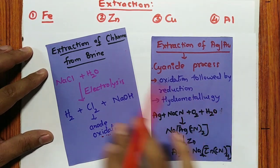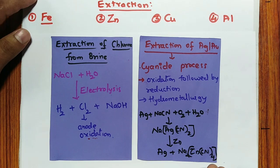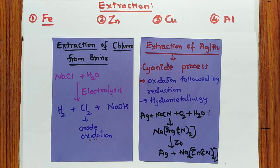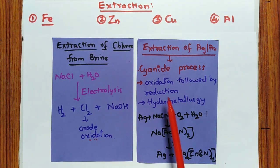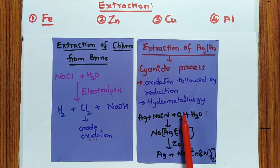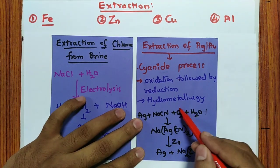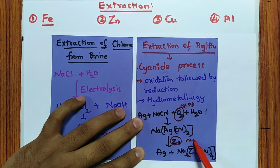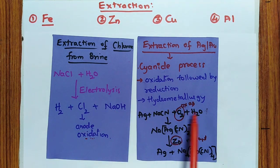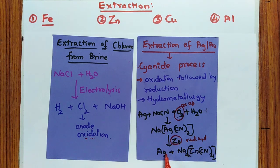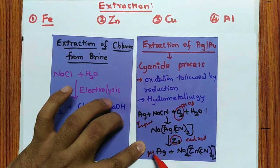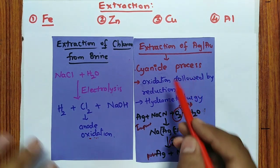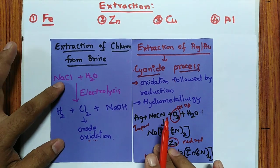Extraction of gold or silver: gold and silver are native metals — less reactive. The process used is the cyanide process, also called hydrometallurgy — oxidation followed by reduction. Oxygen gas is the oxidizing agent; zinc is the reducing agent. Silver reacts with NaCN solution in the presence of oxygen to form a complex, then zinc replaces silver in a double decomposition reaction to give pure silver.